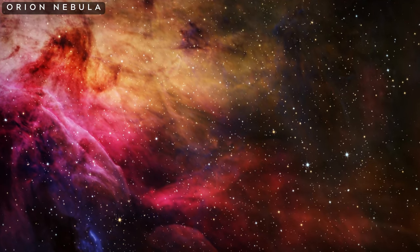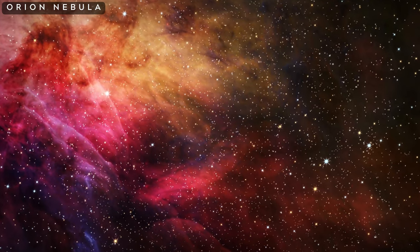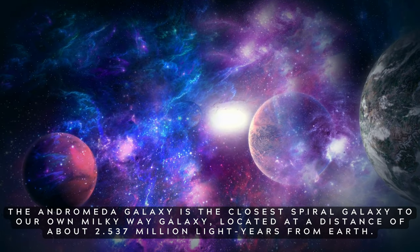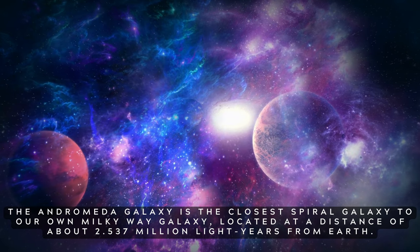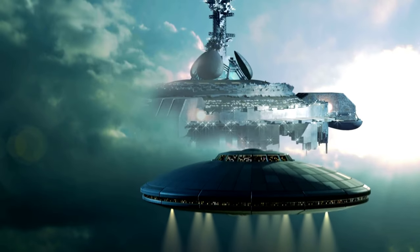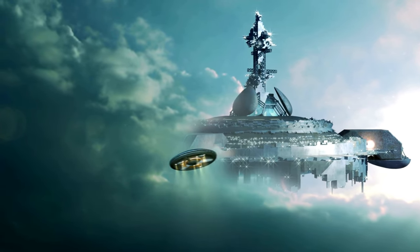The Andromeda Galaxy is the closest spiral galaxy to our own Milky Way, located at a distance of about 2.537 million light years from Earth. It is the largest galaxy in the local group, which is a collection of over 54 galaxies that includes the Milky Way and its satellite galaxies. The Andromeda Galaxy has a diameter of approximately 220,000 light years, making it slightly larger than the Milky Way.